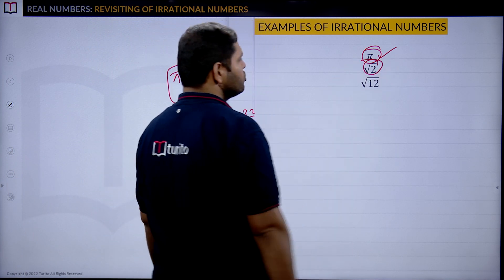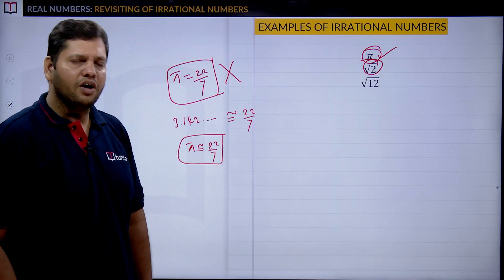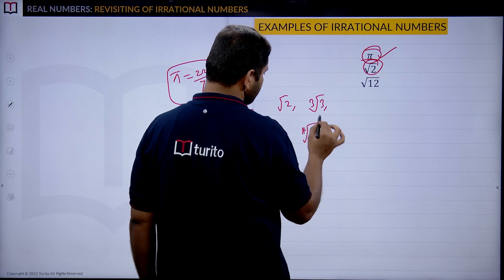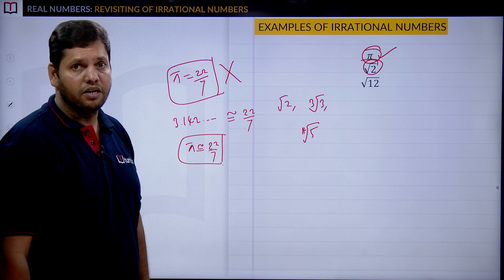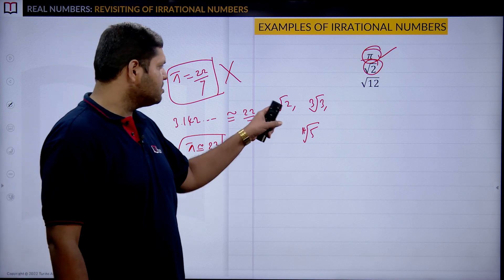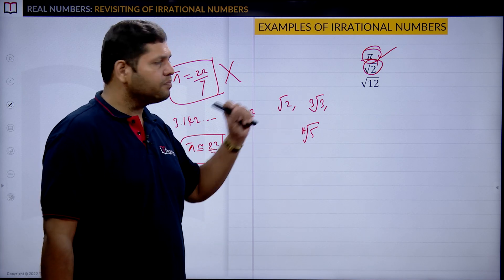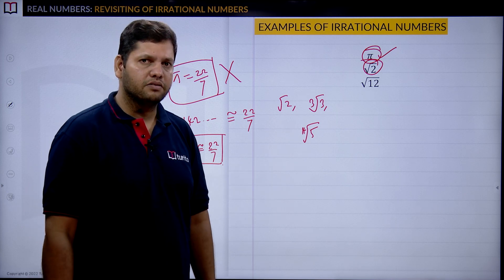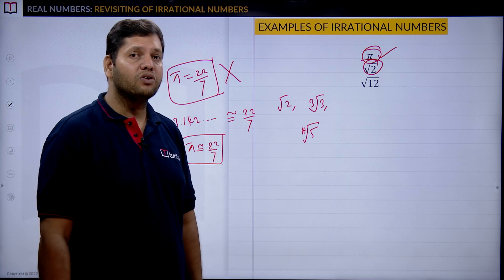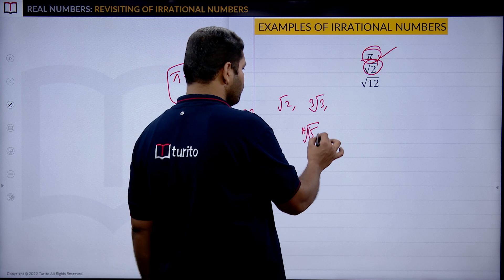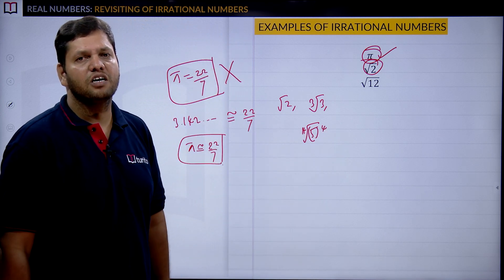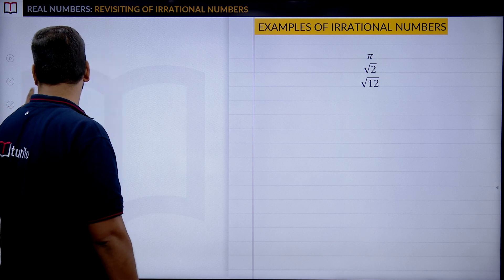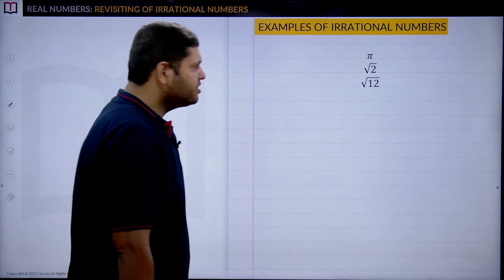Next: root 2 is a square root. You can take square root, cube root, fourth root — anything. But the number inside should not be a perfect square or perfect cube. If we are taking the square root, the number should be a non-perfect square. If taking cube root, the number should be a non-perfect cube. If taking a fourth-order root, the number should not be expressible as a fourth power. In such cases, all those numbers are examples of irrational numbers.